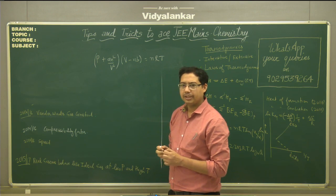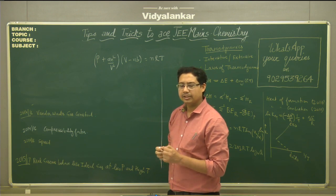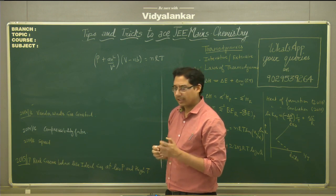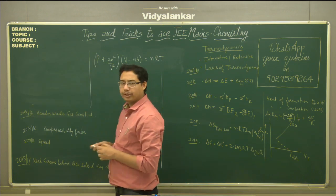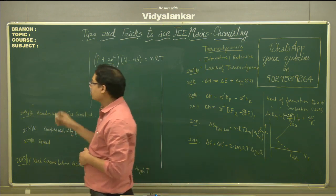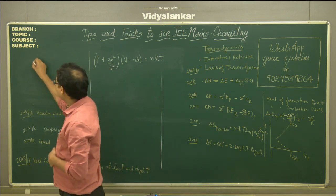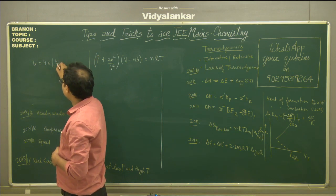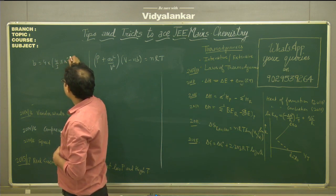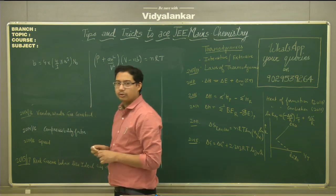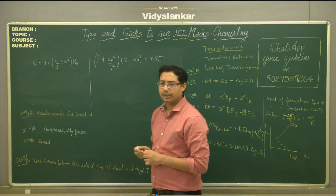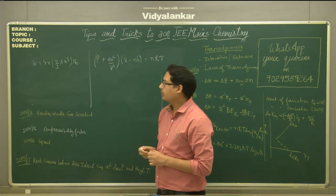B indicates the size of the gas molecule. Sometimes B can be related to the radius of the atom. B is equal to 4 times (4/3)πr³ times Avogadro's number — that is, B = 4 × (4/3)πr³ × Nₐ.